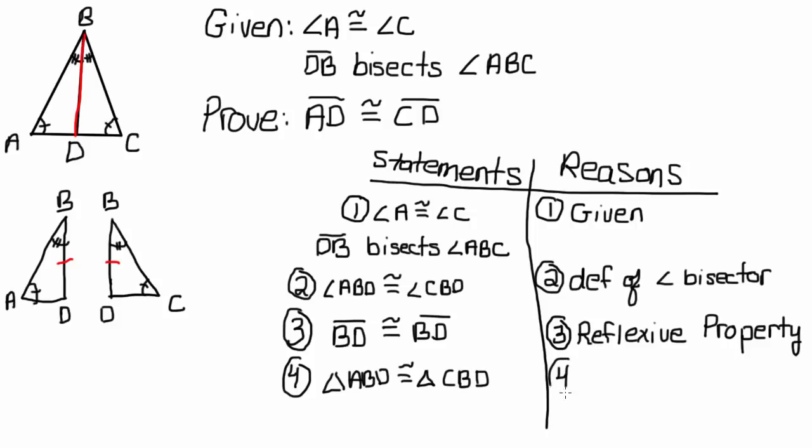All right, we're almost done. So if the triangles are congruent, that means all of their corresponding parts are congruent. So that must mean that AD is congruent to CD, and we are done. So segment AD is congruent to segment CD, and the reason for that is our favorite CPCTC. Nicely done.